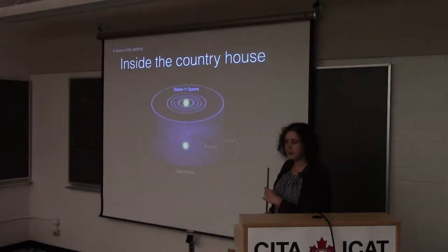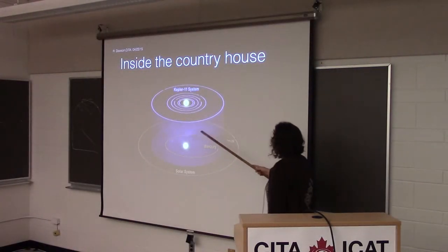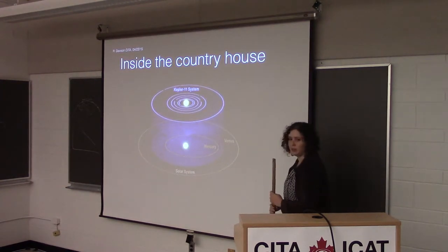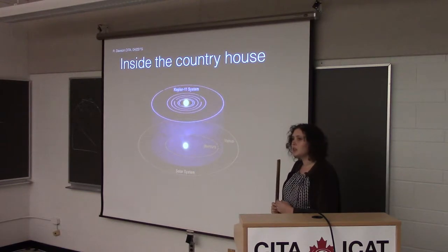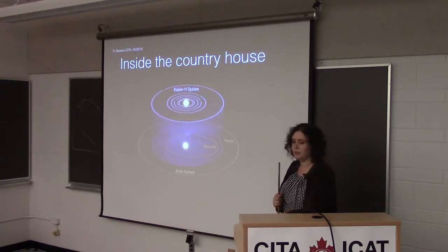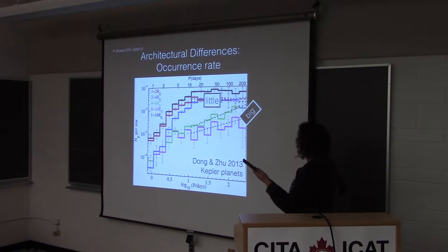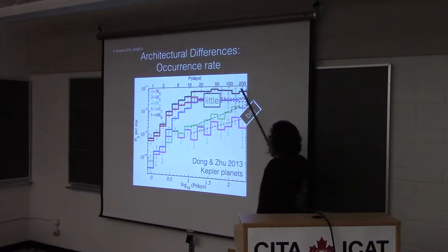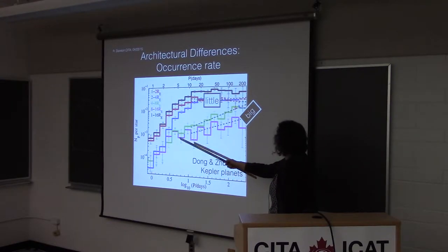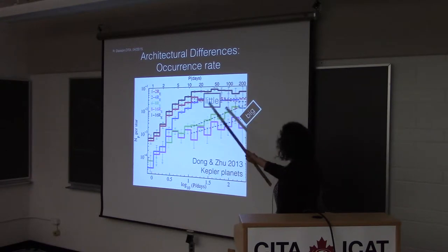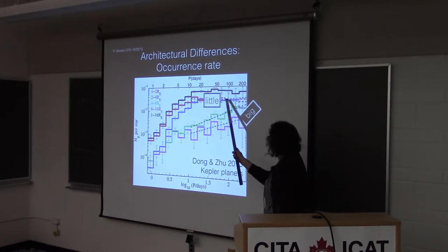A lot of the Kepler planets are in very compact multiple planetary systems — systems with multiple transiting planets. An archetype example is the Kepler 11 system, where all five inner planets could fit within the orbit of Mercury in our solar system. There are some very significant architectural differences between the big and little planetary systems. One is the occurrence rate: the number of planets per star as a function of orbital period. For the big planets, the occurrence rate is rising within a year, while for the little planets it flattens out beyond seven days.